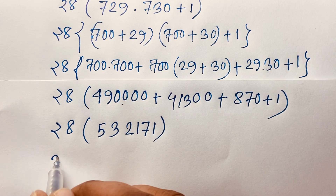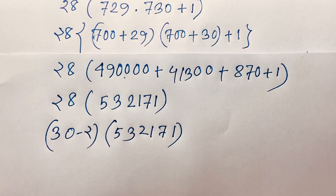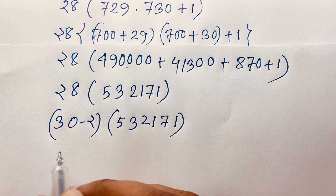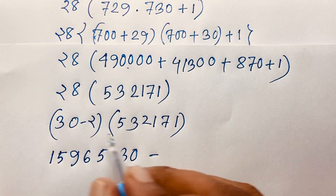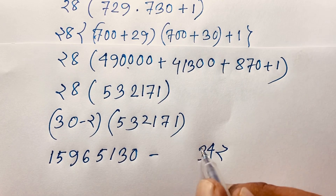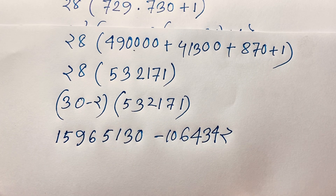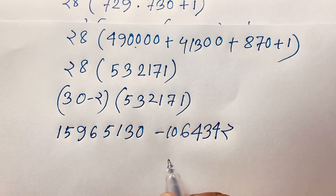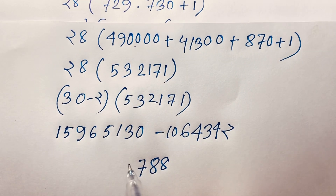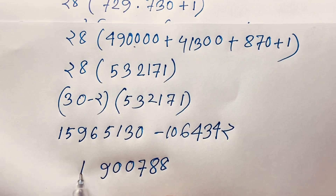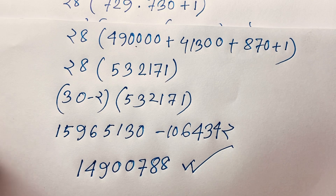Now 28 can be written as 30 minus 2, and we multiply by 532171. So 30 times 532171 gives 15965130, minus 2 times 532171 gives 1064342. Now subtracting: 15965130 minus 1064342. Computing this step by step, our final answer is 14900788. This is our final answer to this math problem, solved without a calculator.